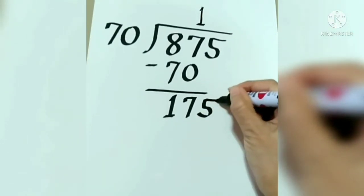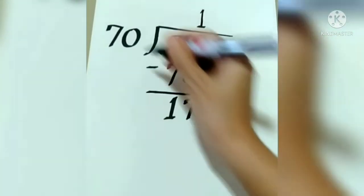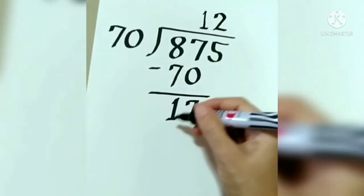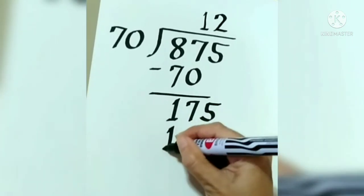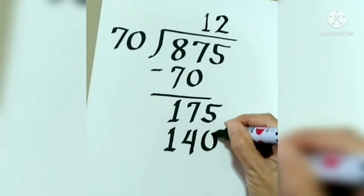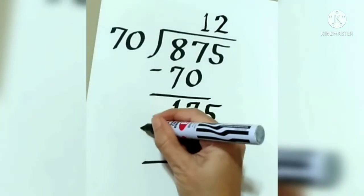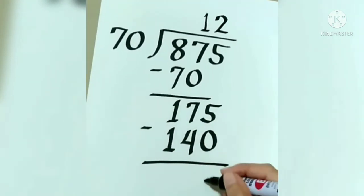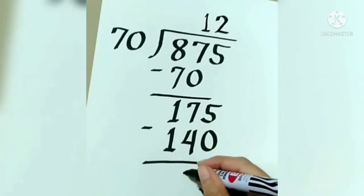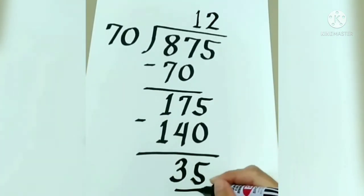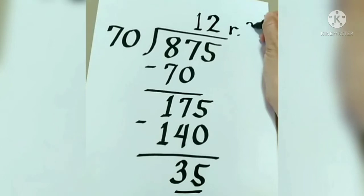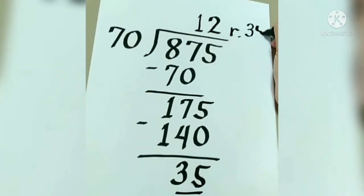Next, 175 divided by 70 is 2. 2 times 70 is 140. 5 minus 0 is 5. 7 minus 4 is 3. There is a remaining 35. Therefore, the answer is 12 remainder 35.